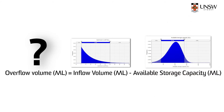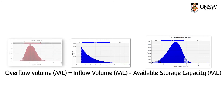To answer these questions, I need to develop a PDF showing the calculated overflow volume. In this case, the two parameters in the equation are also PDFs. I need to subtract the available storage capacity PDF from the inflow volume PDF. Can you do that mathematically? What if the PDFs are completely different shapes? How would you do it?